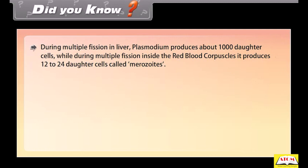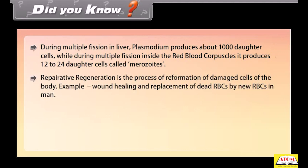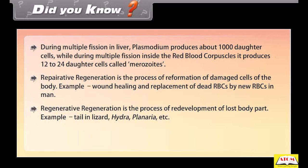Did you know? During multiple fission in liver Plasmodium produces about 1000 daughter cells, while during multiple fission inside red blood corpuscles it produces 12 to 24 daughter cells called merozoites. Reparative regeneration is the process of reformation of damaged cells of the body — for example, wound healing and replacement of dead RBCs by new RBCs in humans. Regenerative regeneration is the process of redevelopment of a lost body part — for example, tail in lizard, hydra, and planaria.